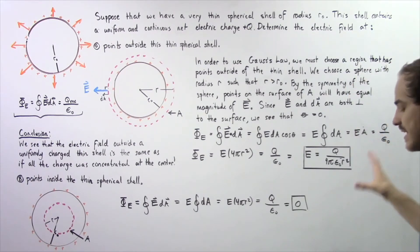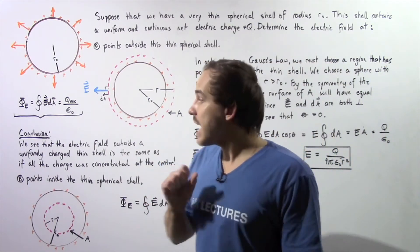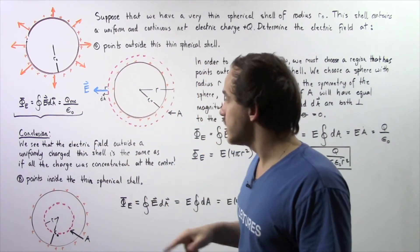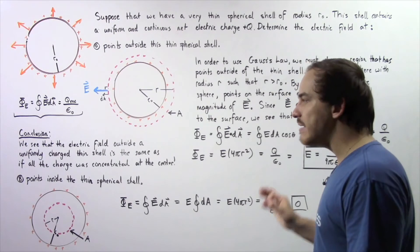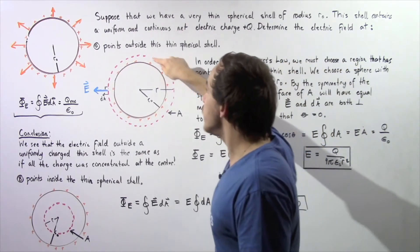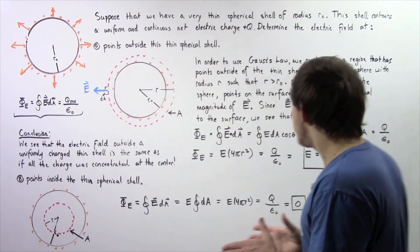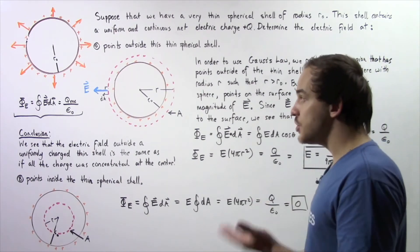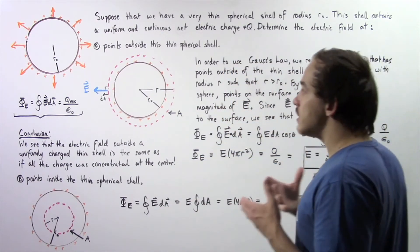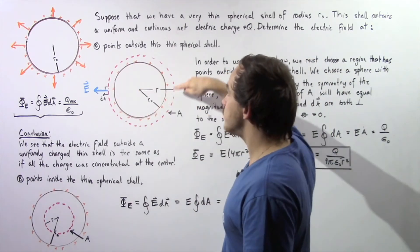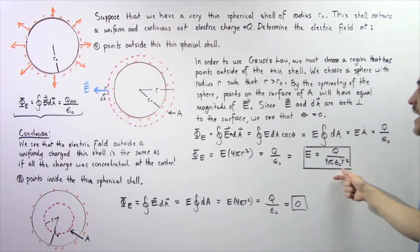Notice this is the same equation for the electric field due to a static point charge. We can conclude that the electric field outside a uniformly charged thin shell is the same as if all the charge on the shell were concentrated at the center as a point charge. This is the same equation as Coulomb's law for static point charges. So for any point outside such a thin spherical shell with uniform continuous charge, we use this equation.